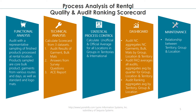Dashboard: audit NC aggregates non-conformances for garments, bulk, and mats by group, location, and territory. Audit FAQ averages all audits and aggregates the average by quarter for group, location, and territory. Audit ranking aggregates the average by territory, group, and location.